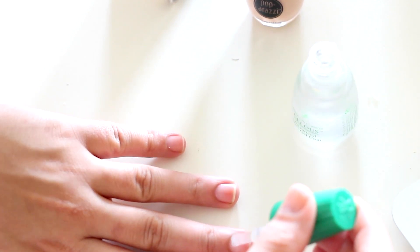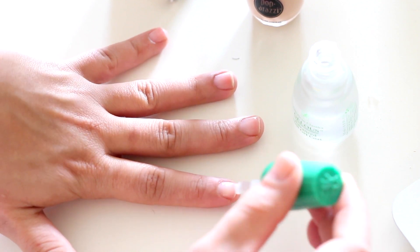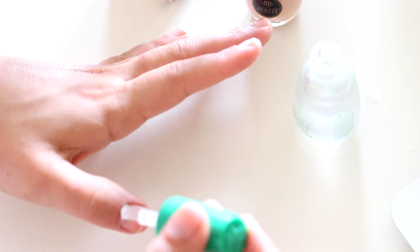If you would like to use a base coat before doing this step, you can do that. I've done that in the past and it worked just fine. You would do the base coat first and then your first layer of the Gelous.